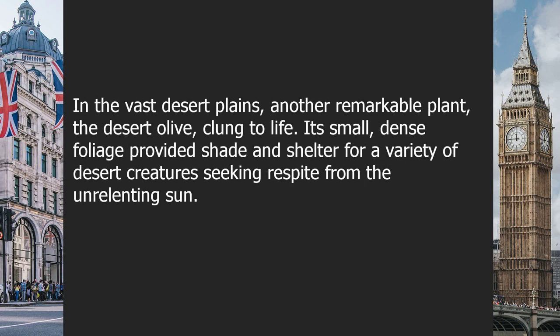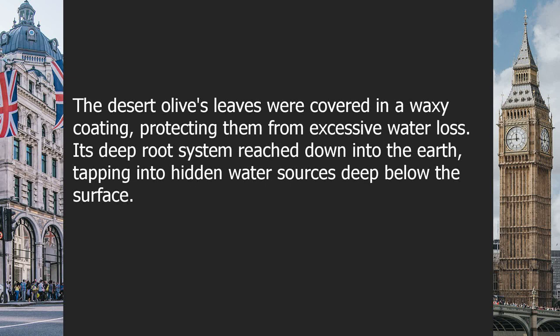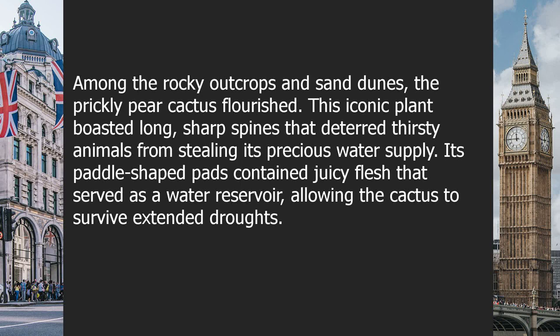In the vast desert plains, another remarkable plant — the desert olive — clung to life. Its small dense foliage provided shade and shelter for a variety of desert creatures seeking respite from the unrelenting sun. The desert olive's leaves were covered in a waxy coating, protecting them from excessive water loss. Its deep root system reached down into the earth, tapping into hidden water sources deep below the surface.